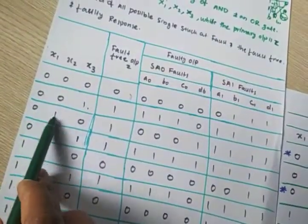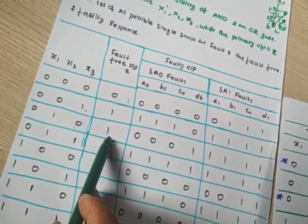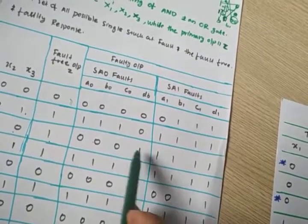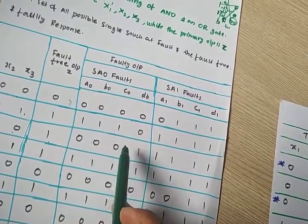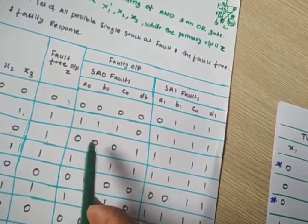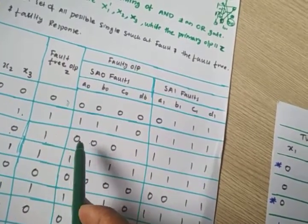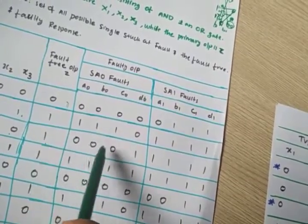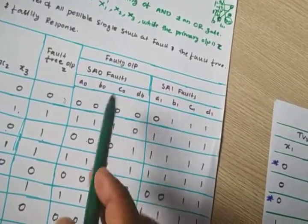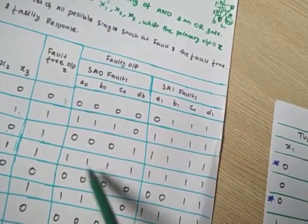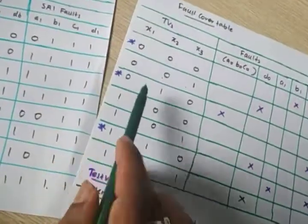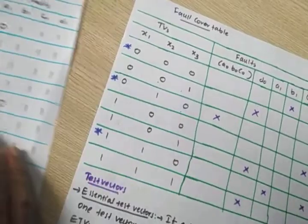Similarly for test vector 0,1,0: the expected fault-free output is 1. A0, B0, and others give 1, but A0 and B0 give 0, which is different from the fault-free output. So these are fault states. A0, B0, and C0 are crossed for test vector 0,1,0.